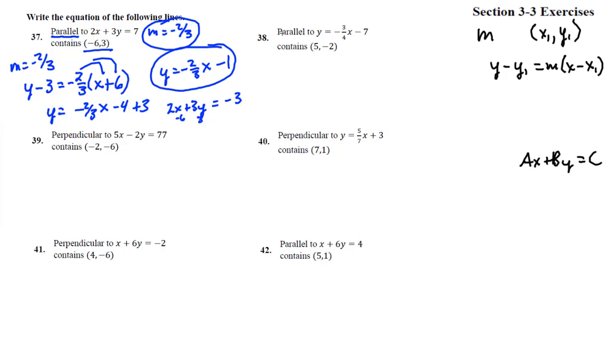All right, the next one, number 38. Parallel to, that means we're going to use this same exact slope. Again, slope is negative 3 fourths. So let's stick it in. Y minus y1, so that's y plus 2 equals negative 3 fourths x minus 5. Distribute this so we can simplify it, and we get negative 3 fourths x plus 15 fourths. Subtract 2 from both sides so the y is now by itself, and we get y equals negative 3 fourths x. Let me see, 15 fourths minus 8 fourths, common denominator gives you plus 7 fourths.